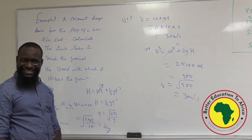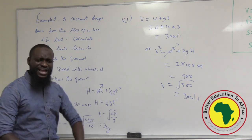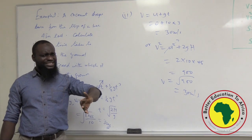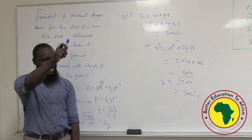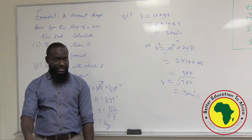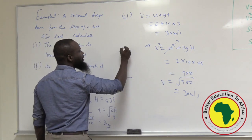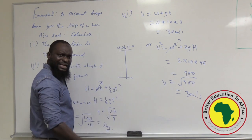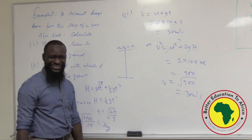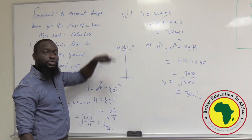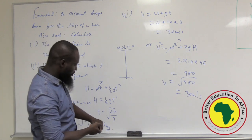We all understand Case 1 — a body falling freely from rest. Now let's go to Case 2: a body projected vertically upwards. Case 2 has Case 1 inside it — it goes up and then falls back down like a freely falling body. When it's projected upwards with some initial velocity U, gravity reduces the speed — 10, 9, 8 — until it reaches zero at the maximum height. Then it falls back down, increasing speed again until it hits the ground.